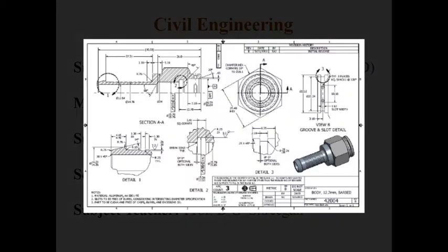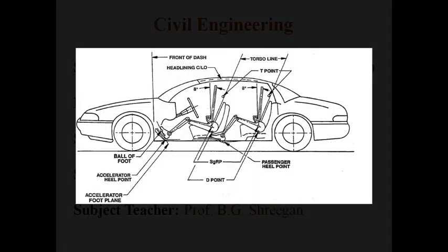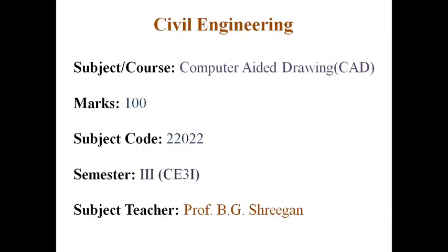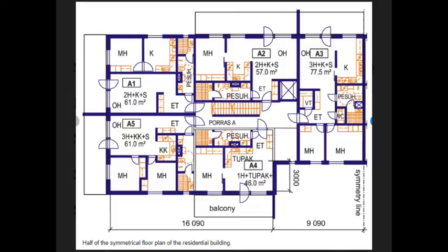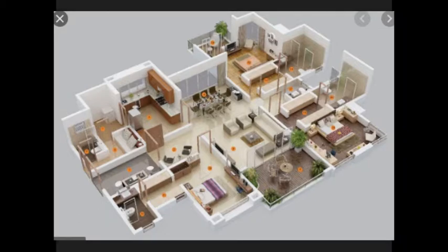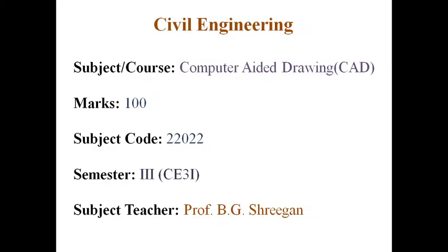In all branches of engineering, various softwares are used to model various objects, parts, or complete systems using two-dimensional and three-dimensional views. Also, in civil engineering, software drafting tools are used to draw civil engineering drawings like plan, elevation, and section of any building or structure using two-dimensional or three-dimensional drawings and also isometric views as per requirement.